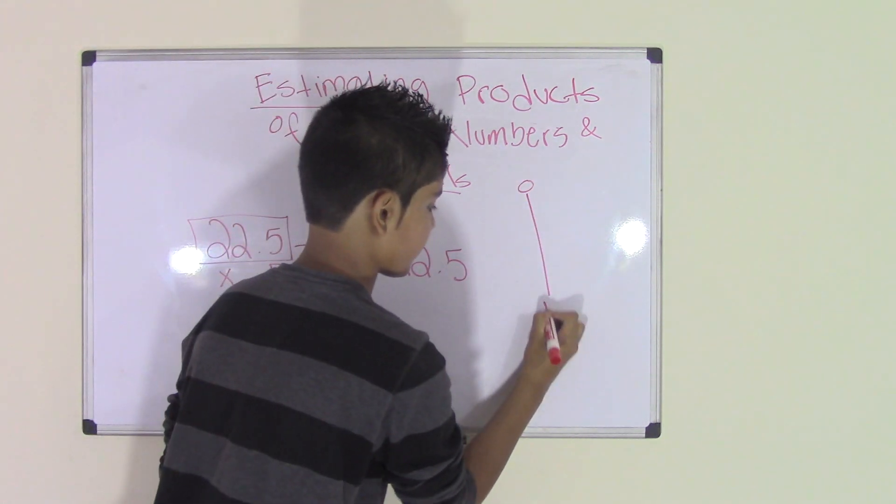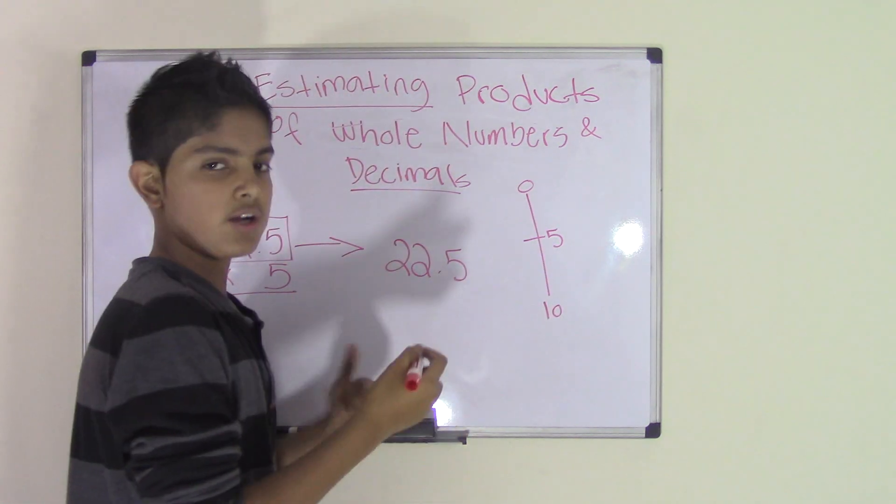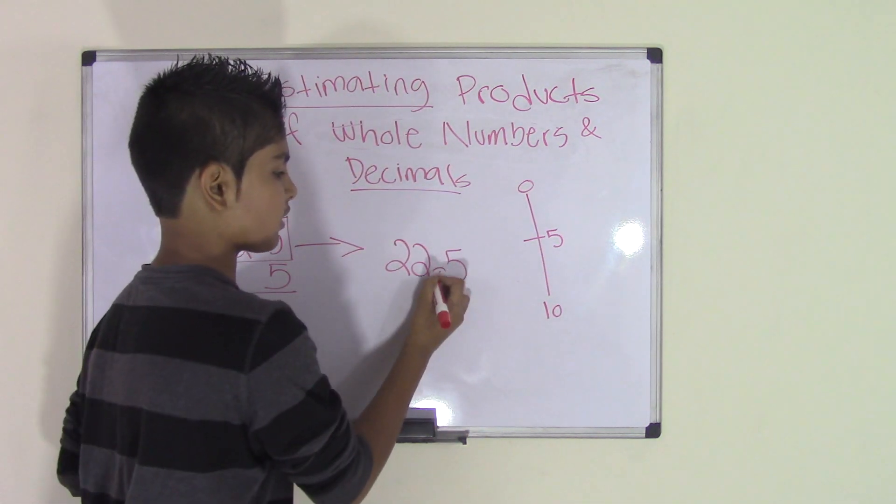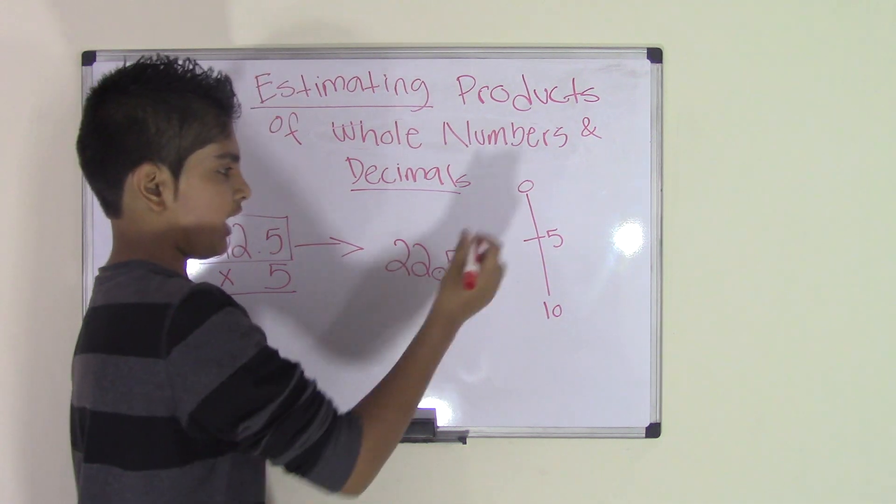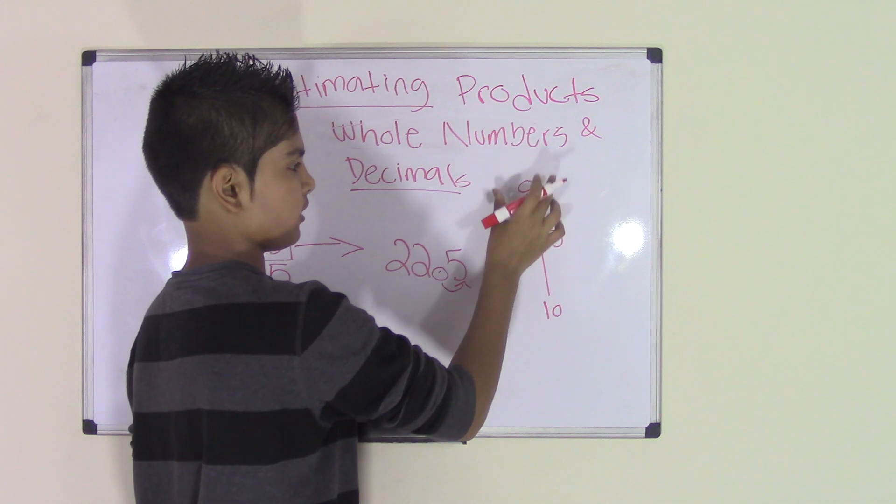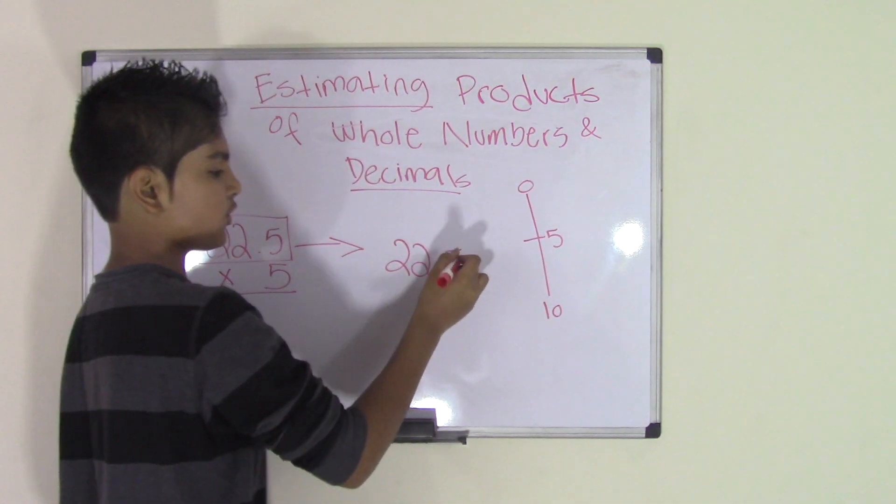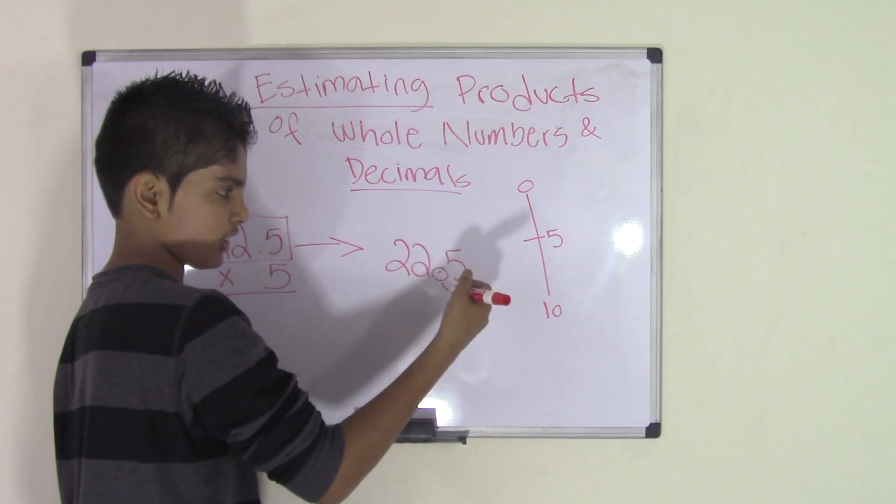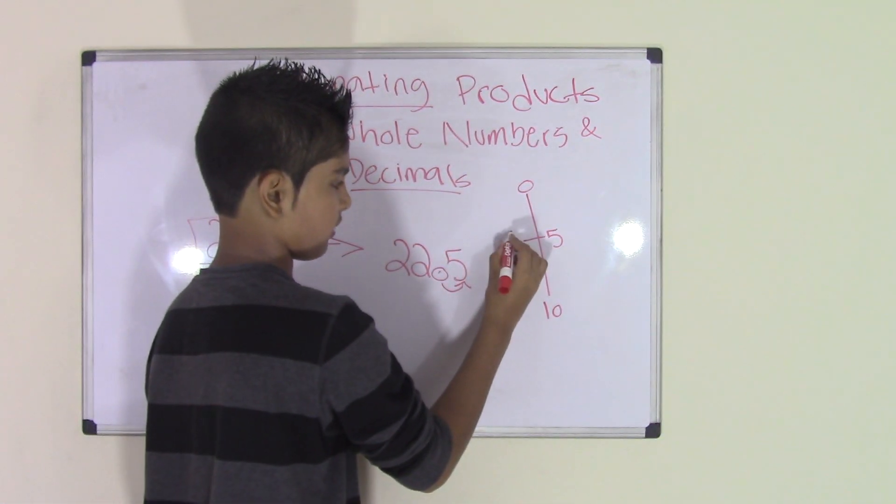Now as you see over here, I'm making a range. Why? Because to estimate this, we need to look at the number after the decimal point, so in this case it's 5. And so we need to make a range of 0 to 10 and put 5 in the middle. So now we go ahead and put the number that's after the decimal point onto our range, and 5 will go in the middle, right here.